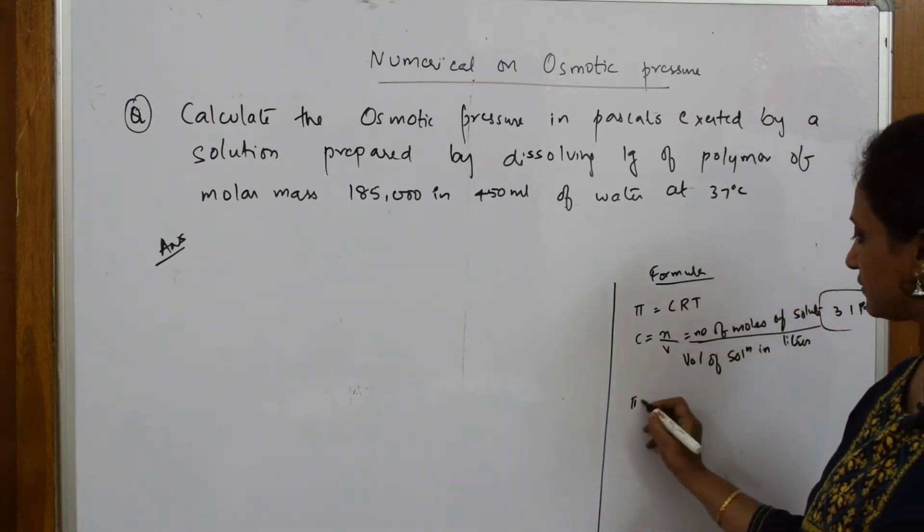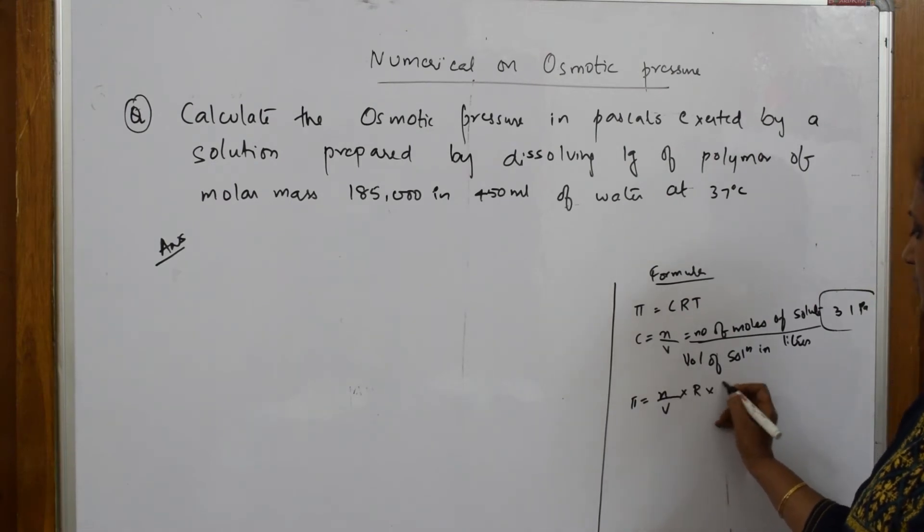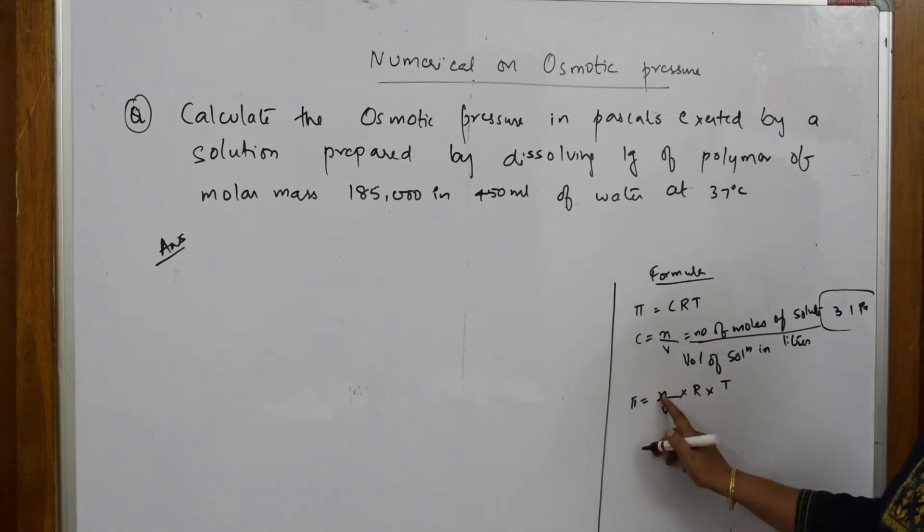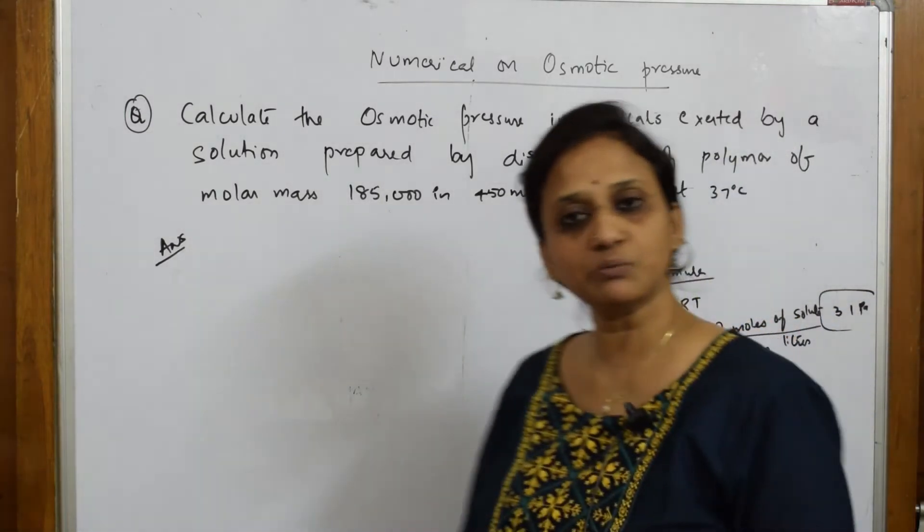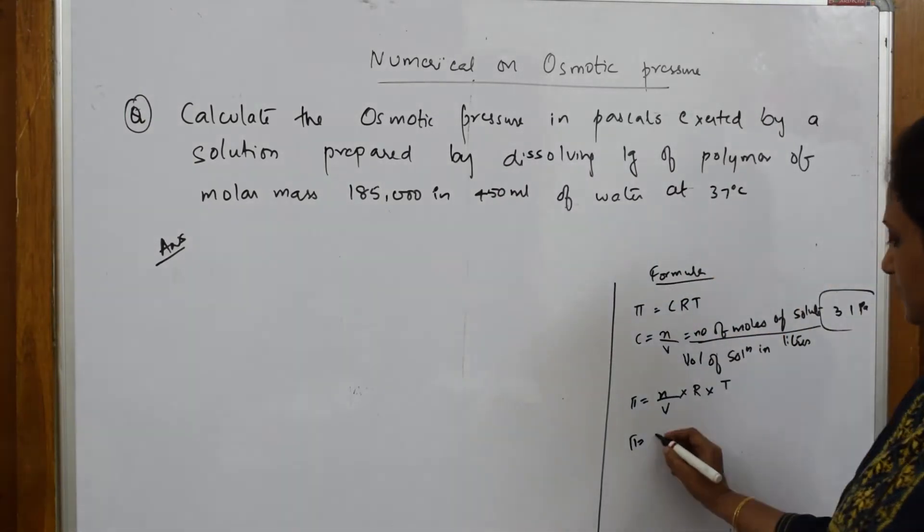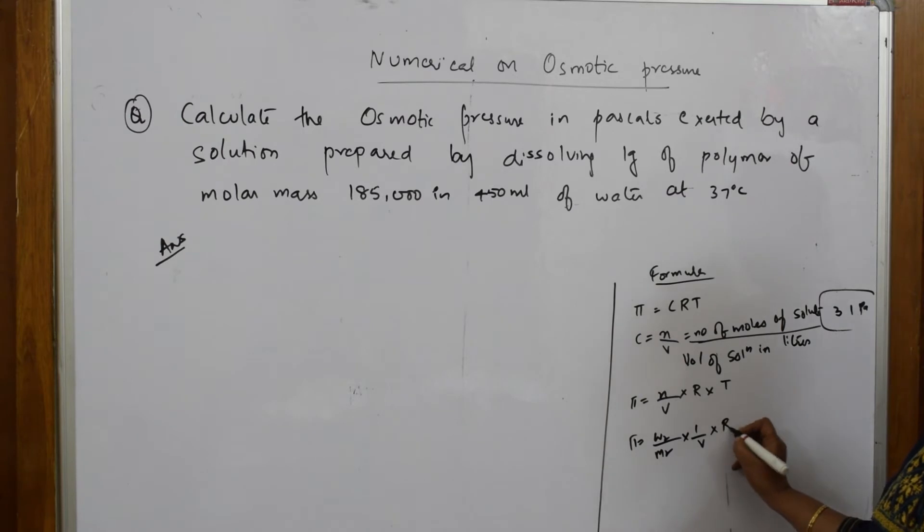Let us write pi is equal to N by V into universal gas constant into temperature Kelvin. Again, I can further write this as pi is equal to N can be written as N is number of moles of solute which is equal to weight by molecular weight. So I can also write W2 by M2, into 1 by V into R into T.